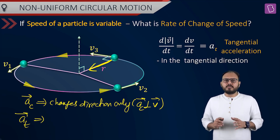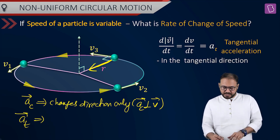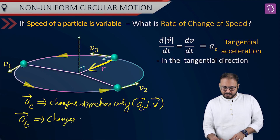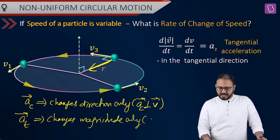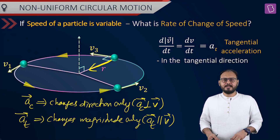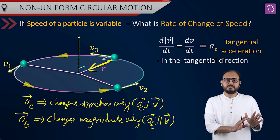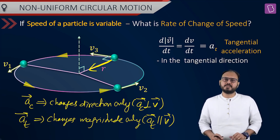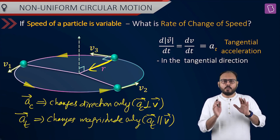If you only want something to speed up or speed down without touching the direction, that is possible when at — tangential acceleration — is parallel to velocity. So velocity change is divided into two parts: direction change and magnitude change. Who changes direction? ac. Who changes magnitude? at.